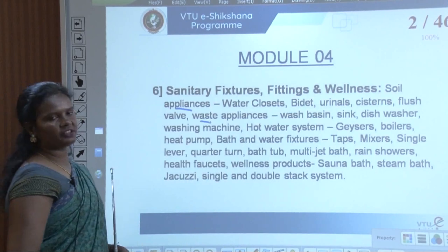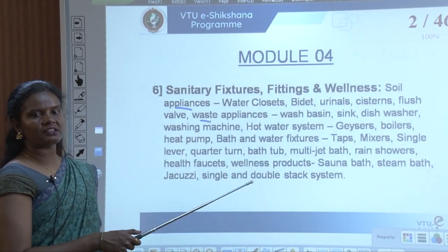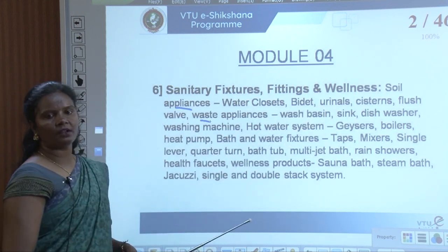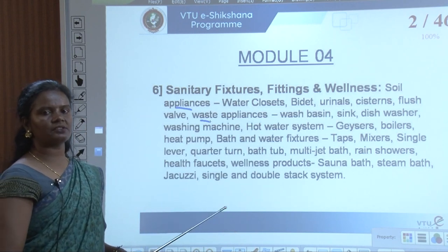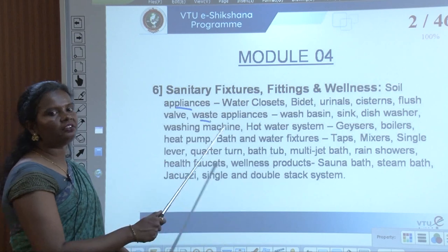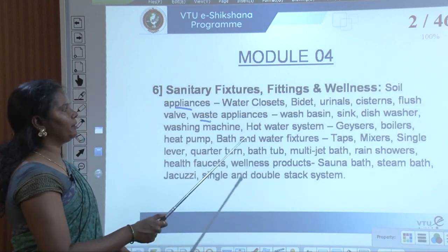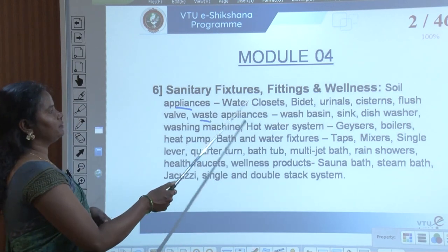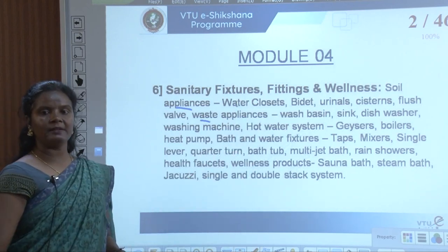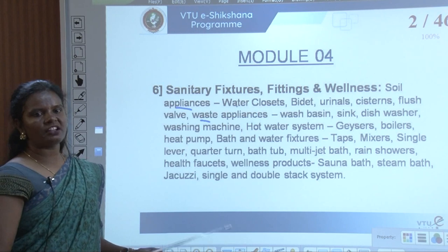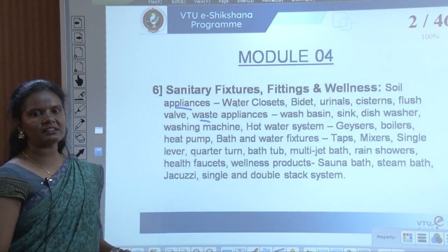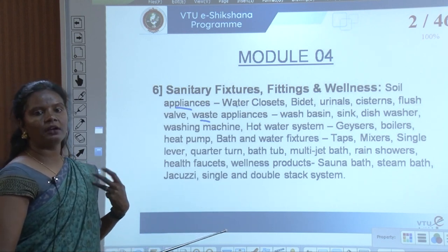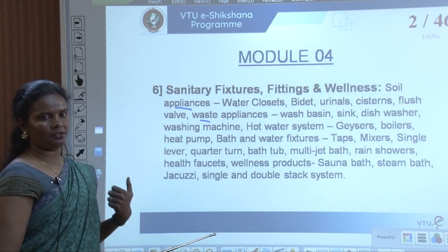Soil appliances and waste appliances differ in the way the waste is collected. Soil waste and other water waste — the other water waste can be reusable. Soil waste can also be reused but they have to be separated so that while reusing it should not be affected. Waste appliances are those where the water content could be reused as grey water.